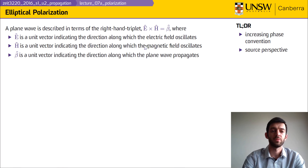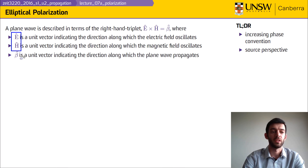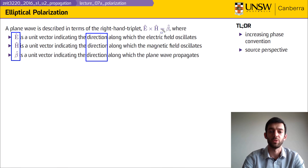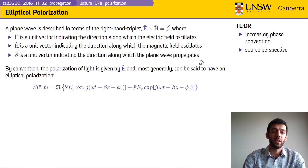As before, a plane wave is described in terms of a right-hand triplet: E × H = β̂. What this means is these three components — E, H, and β — describe the direction along which the electric field oscillates for E, along which the magnetic field oscillates for H, and the direction of propagation for the plane wave for β̂. By convention, the polarization of light is given by E.